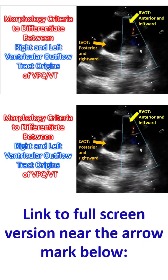70–80% of outflow tract tachycardias originate from the right ventricular outflow tract. Small numbers can originate just above the outflow tract as well, such as aortico-ventricular tachycardia.